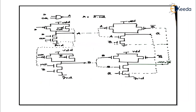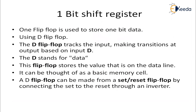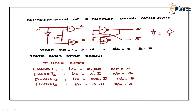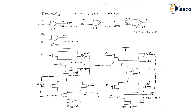For NAND gate 1, D input and clock are given, and A is the output. For NAND gate 2, input is A and Q-bar, output is Q. Wherever A appears, connect all the A's together. Connect all Q-bars together, all Q's together, all B's together, and all clocks together. This completes the static CMOS design.